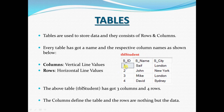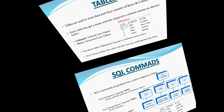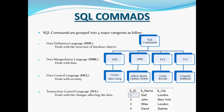The table has three columns and four rows. The rows are: one - Saf, London; two - John, New York; three - Mike, London; four - David, Sydney. All these rows and the values in them are nothing but your data — this is called the table's data. The columns define the table and the rows are the data.